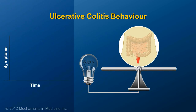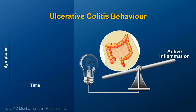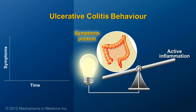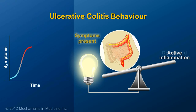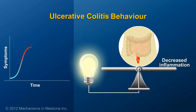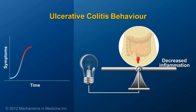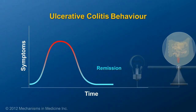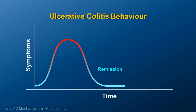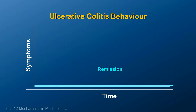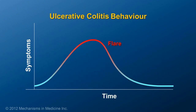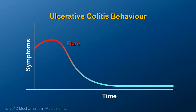Ulcerative colitis is characterized by periods of time with active inflammation when the patient is experiencing symptoms, and periods of time when the inflammation is turned off and the patient feels well. We call these periods of wellness remission. Many patients with ulcerative colitis have long periods of remission, alternating with periods of active inflammation, which are called flares.